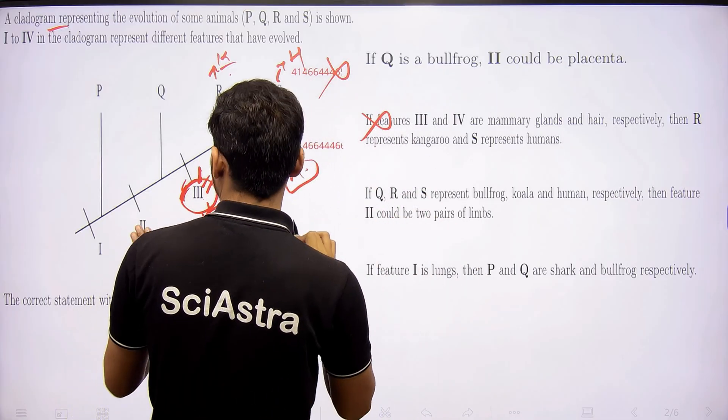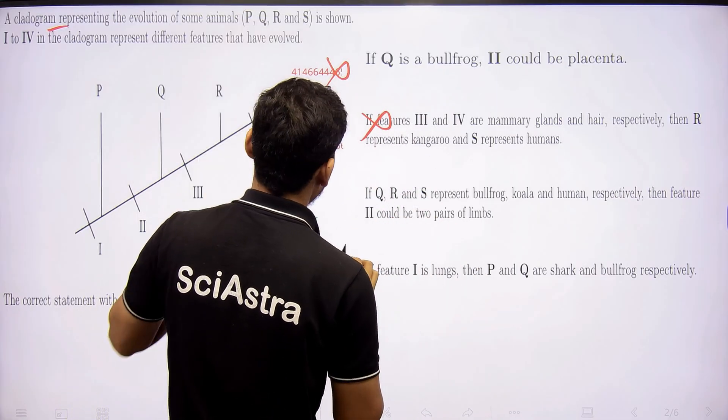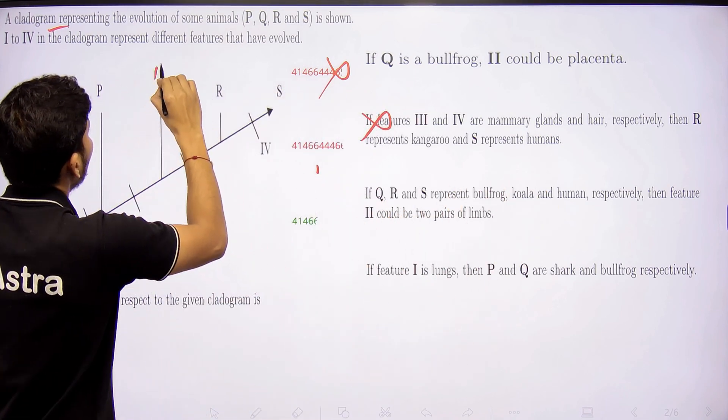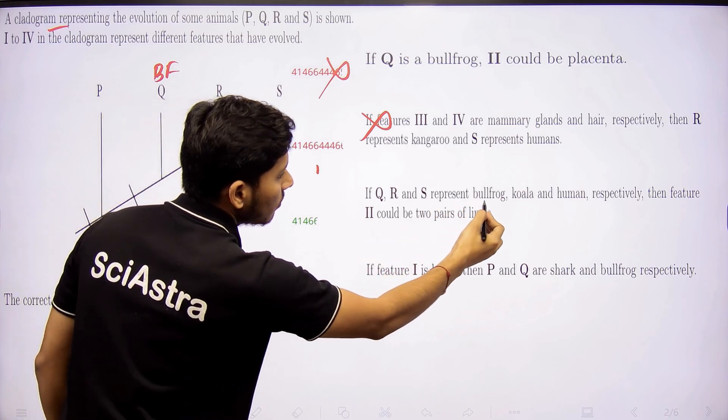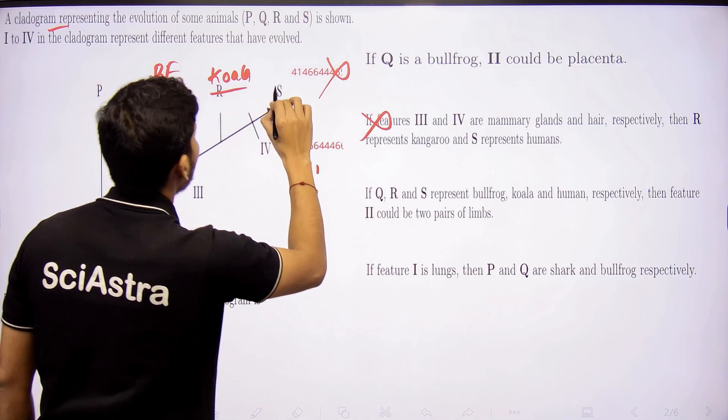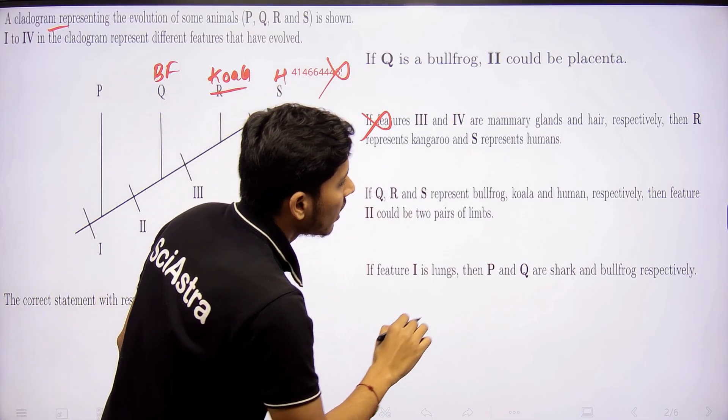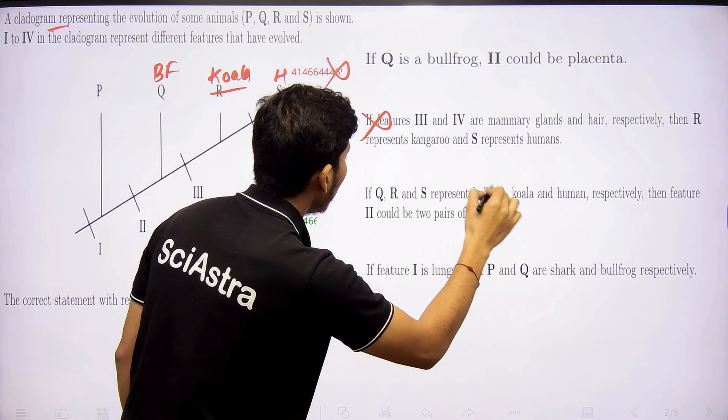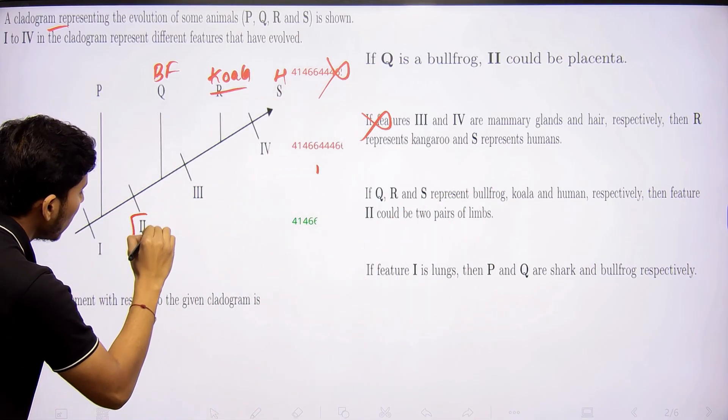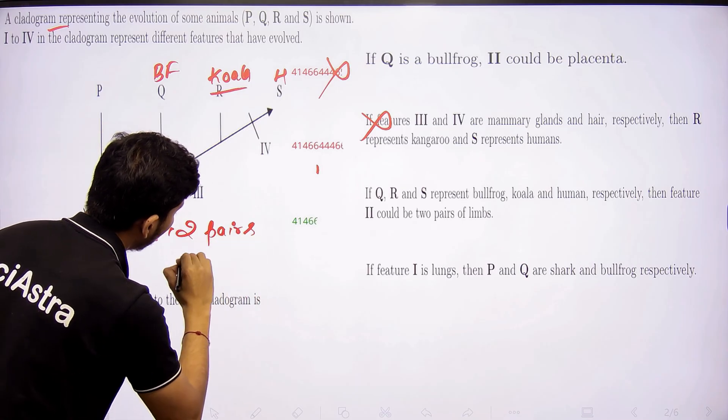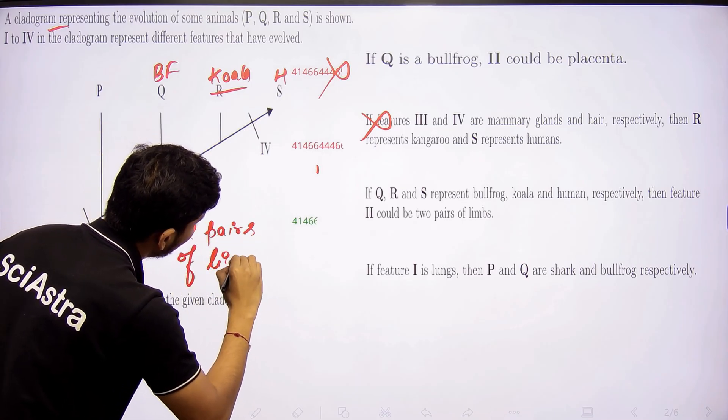Now, let's see other option. If QRS represents bullfrog, koala, koala is a marsupial just like kangaroo, and human. Okay. Respectively, then feature 2 could be 2 pair of limbs. Feature 2 could be 2 pairs of limbs. This seems to be right actually.